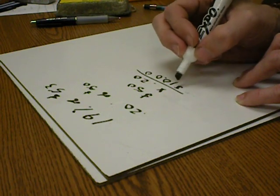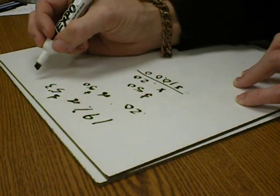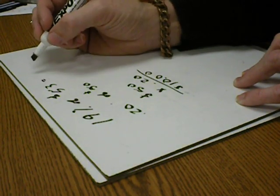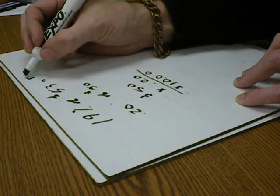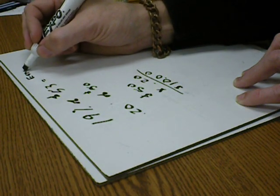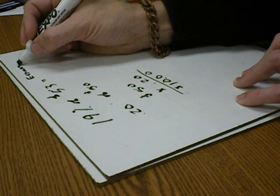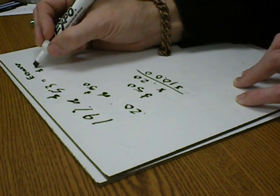So the answer to the estimating of 19% of $53, my estimate is going to be $10.